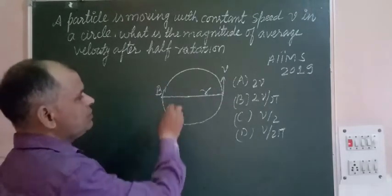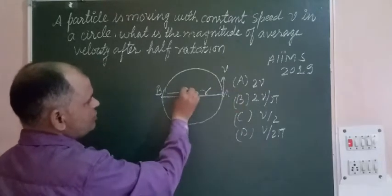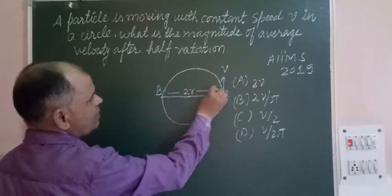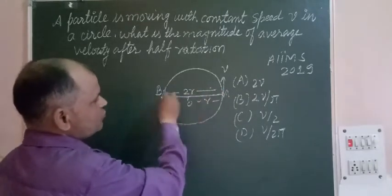So velocity is the same. Here its displacement from point A to B is 2R because this is the diameter. If radius is R from the center, this diameter is 2R.